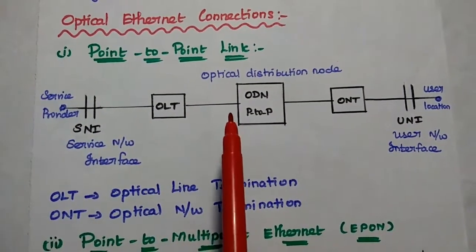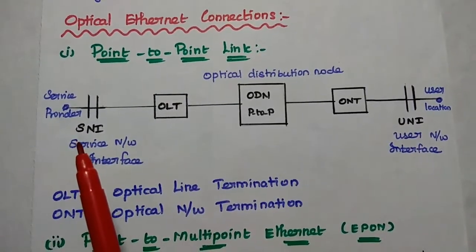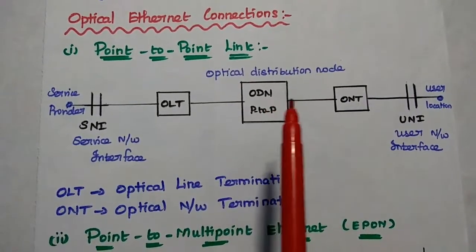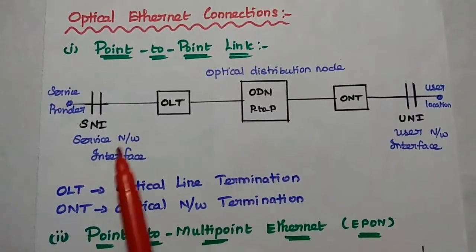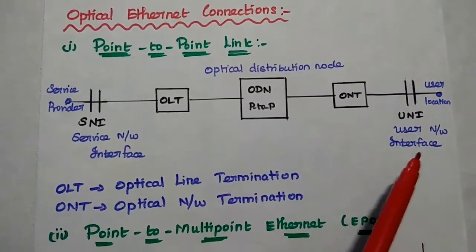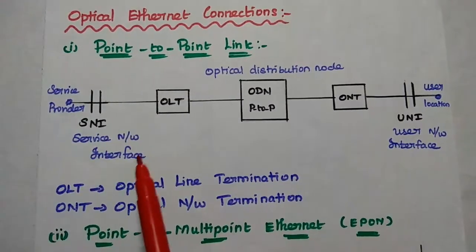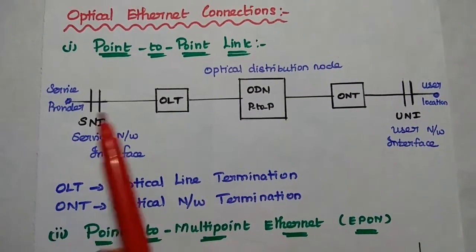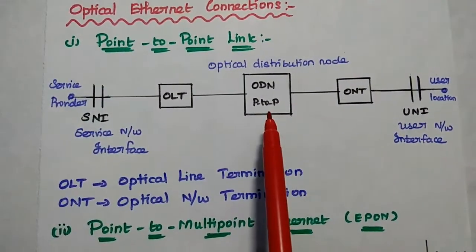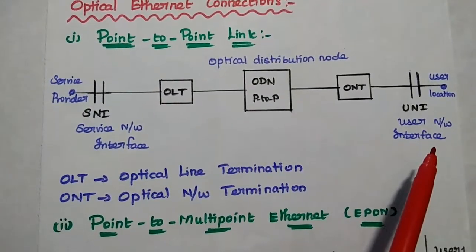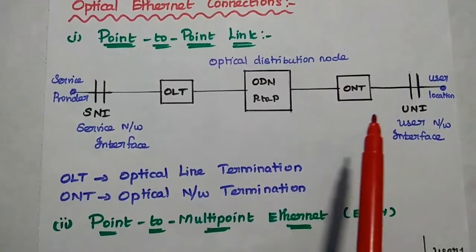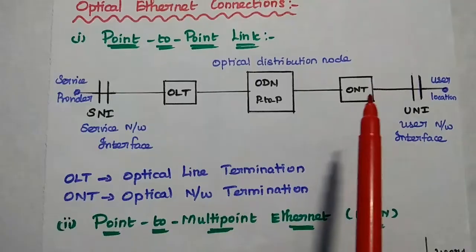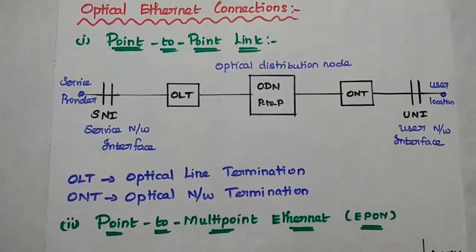In this point to point connection, the service provider is going to provide the service to the user through this ODN, that is optical distribution node. This node provides point to point service from service provider to user location. Service network interface, that is SNI is used to connect the optical line termination with this service provider. Here, this ODN is dedicated for this user location. ONT is nothing but optical network termination.